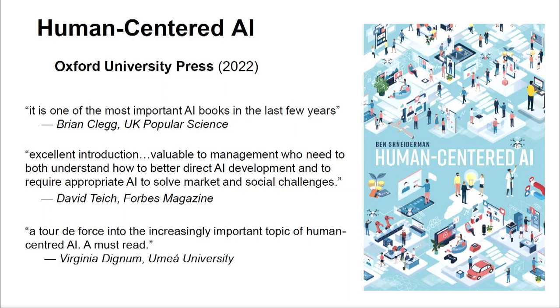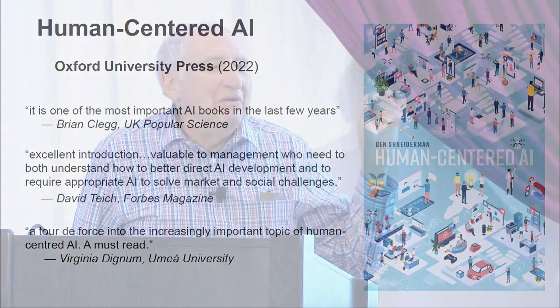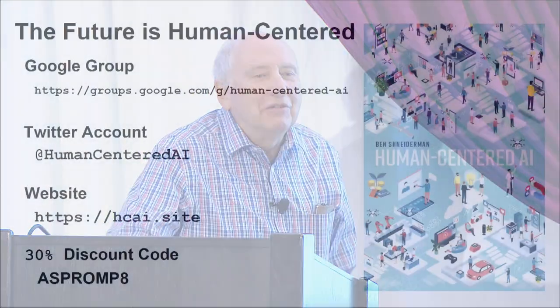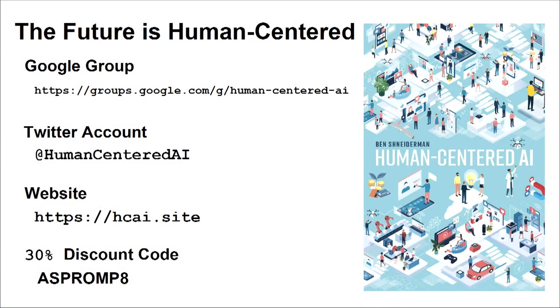One review said it's one of the most important AI books — not just an HCI book. Forbes said it was important for managers because it distills stories into a straightforward way. There's a Google group I run with 2,700 people — once a week you get a note, please sign up. Follow us on Twitter and check our website for resources.